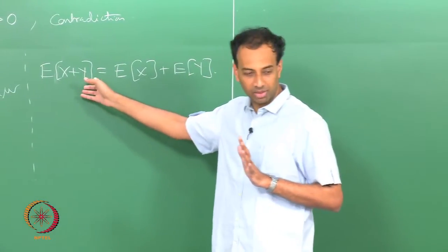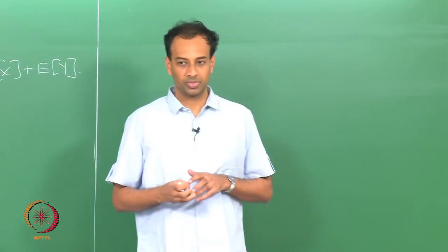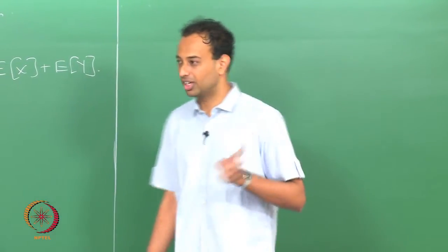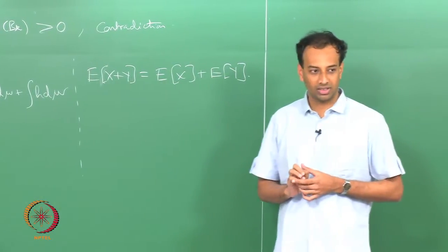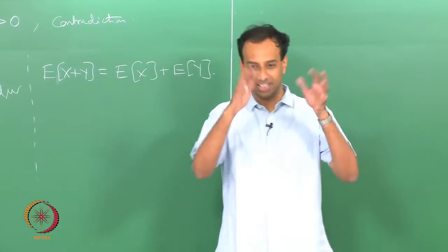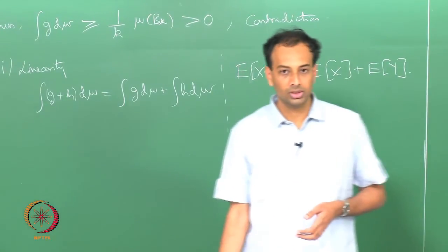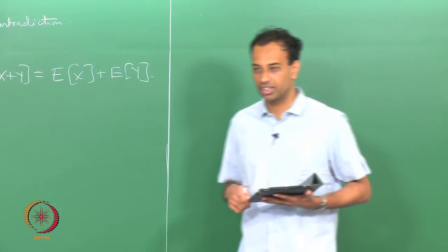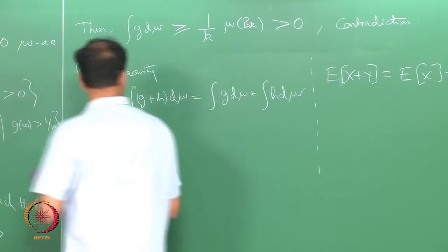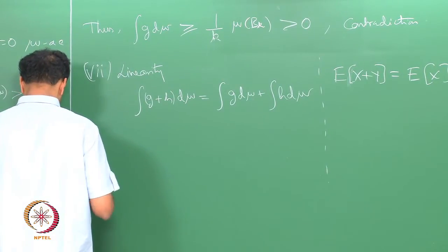It is always true that the expectation of X plus Y equals the expectation of X plus the expectation of Y. This generalizes to any finite sum: if you have a finite sum g_1 + g_2 + ... + g_n, you can always write it as the sum of those n integrals, and similarly for n random variables. This is true whenever the number of terms being summed is finite.